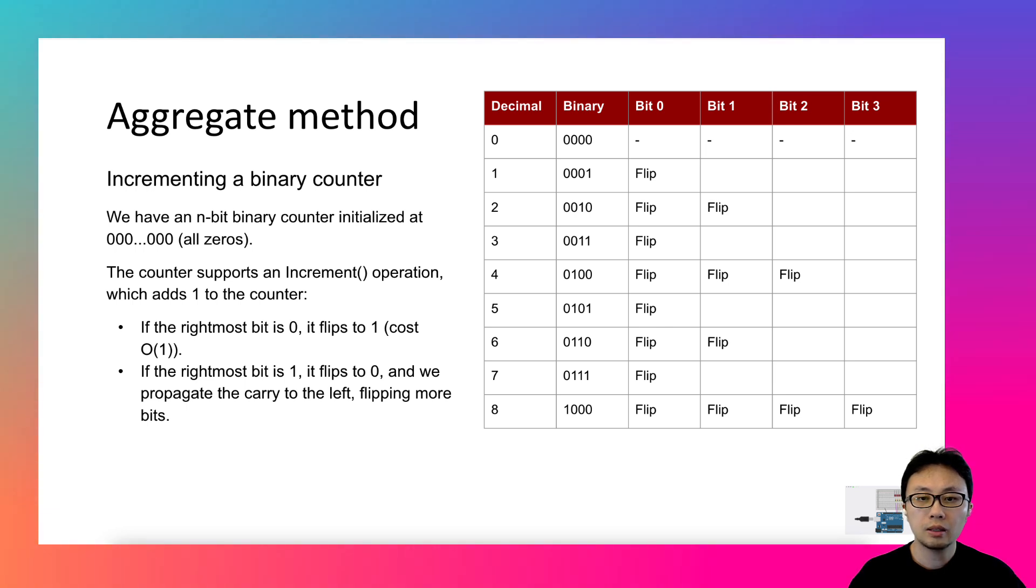In this worst case scenario, the time complexity is big O of n. Remember n here represents the number of total bits. In other cases, the increment operation takes less and varied time to run.